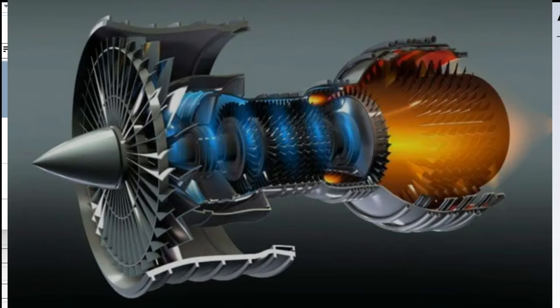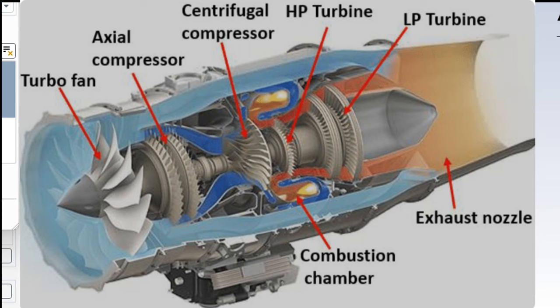Nowadays, most airlines get power from turbofan engines — the airflow will either be mixed with the gas produced or ejected directly. The main reason behind this process is to produce power while maintaining a consistent level of fuel consumption.